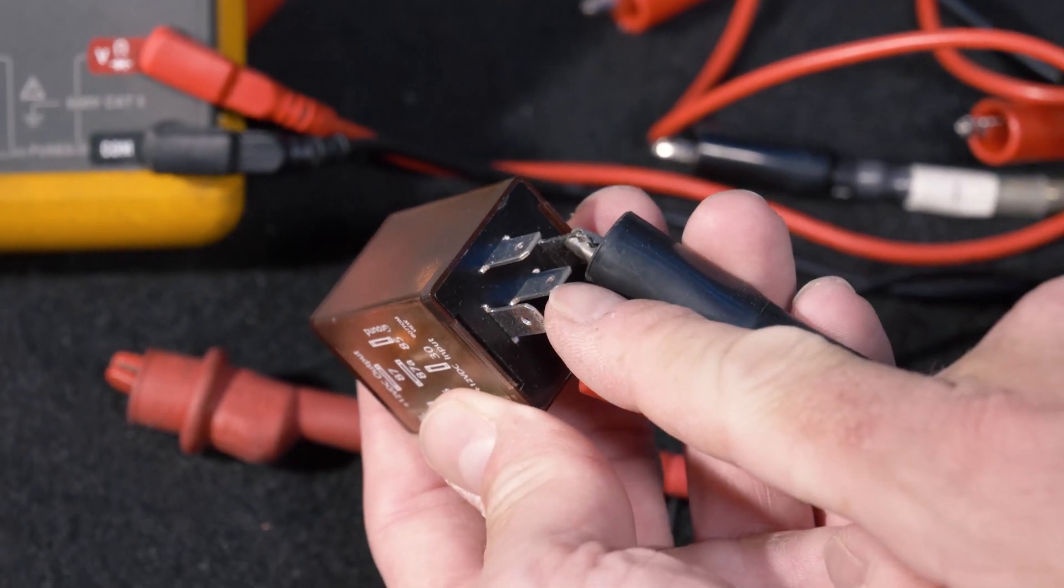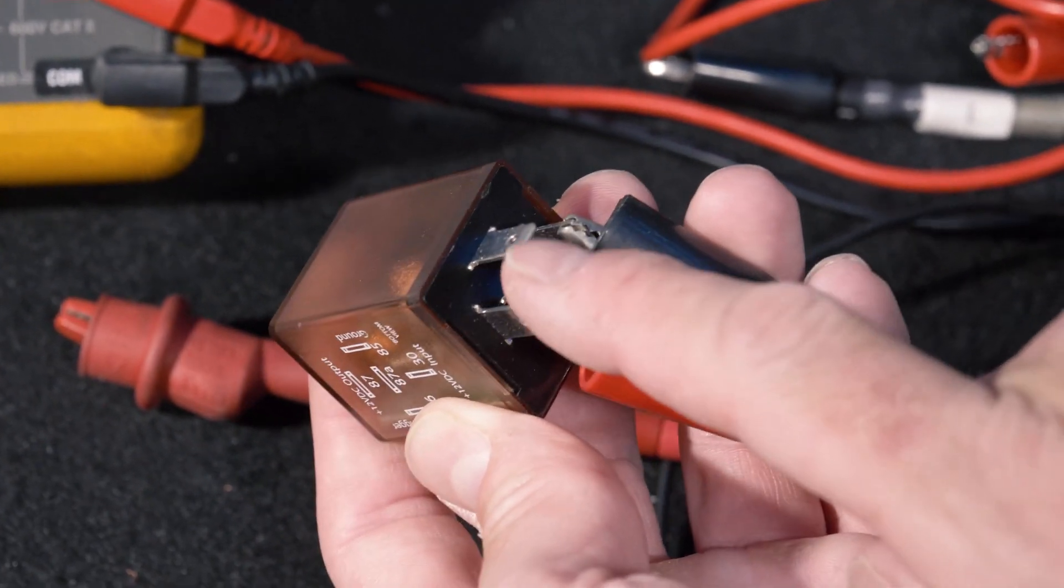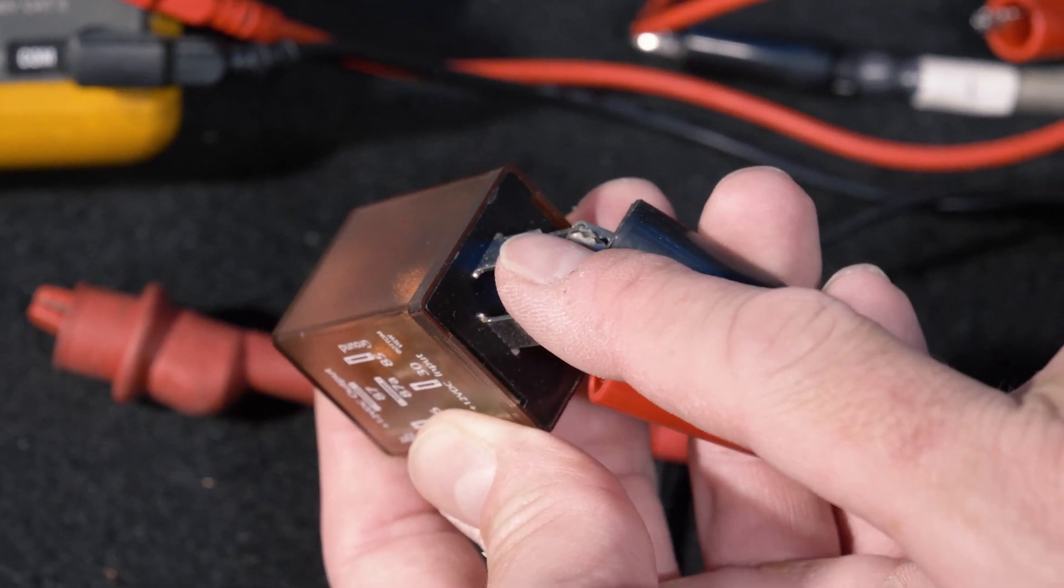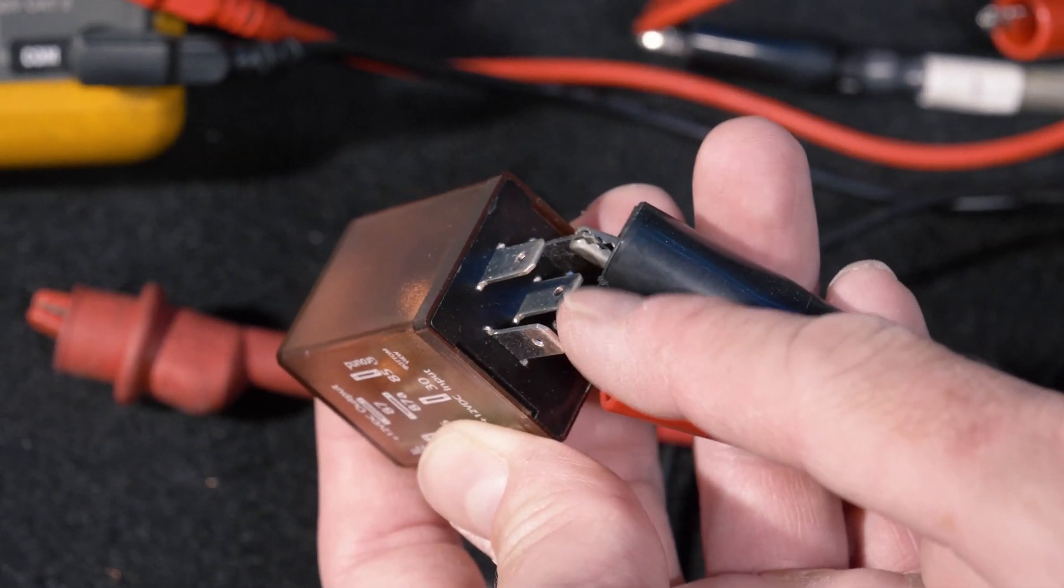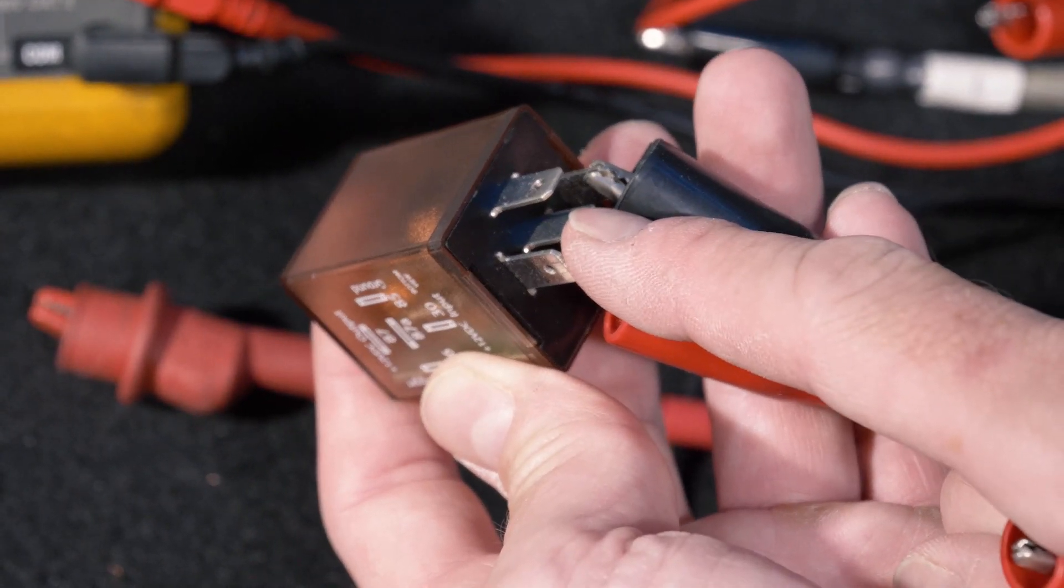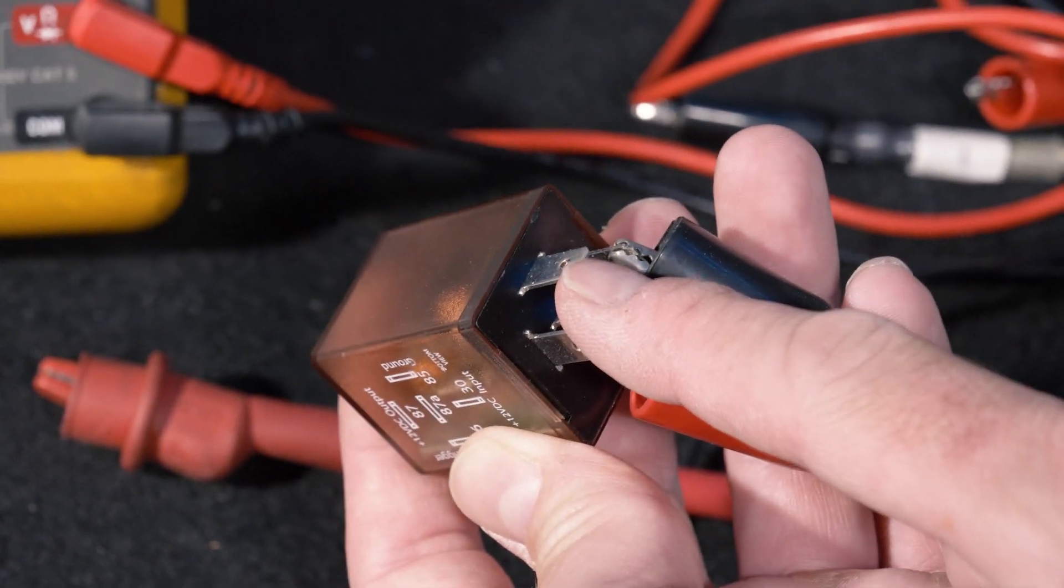This terminal right here will be our normally closed connection. This terminal here will be our normally open connection. The normally closed in its off state has 12 volts. In its on state, this terminal has 12 volts.